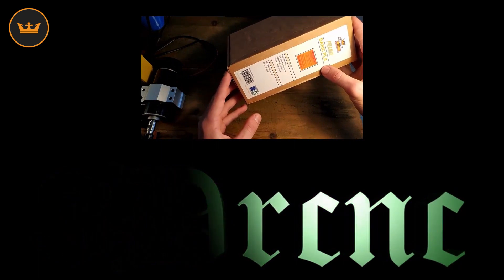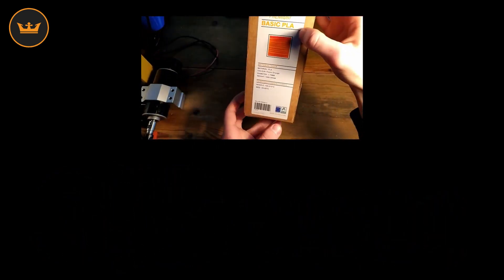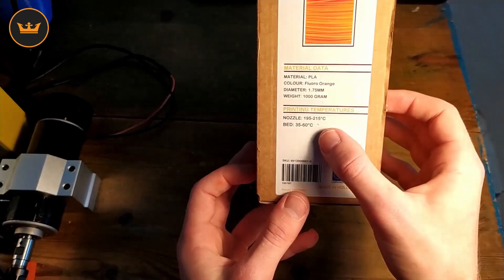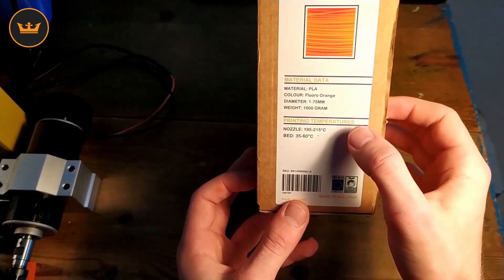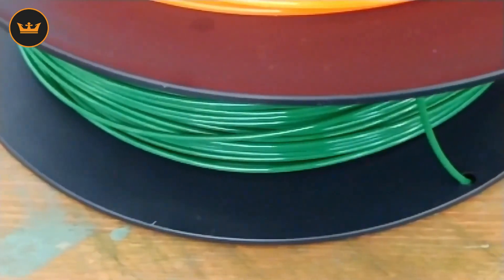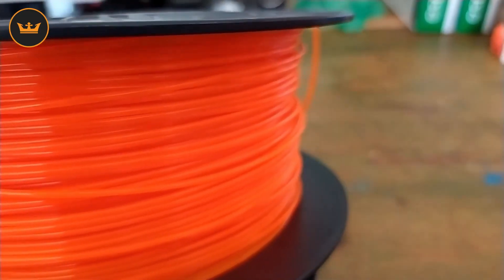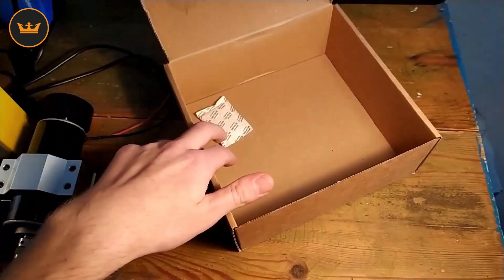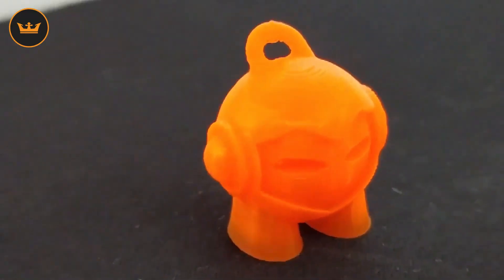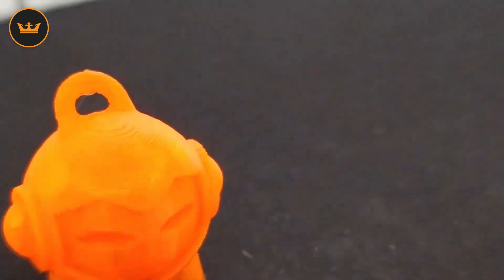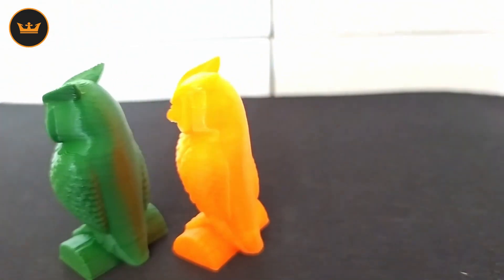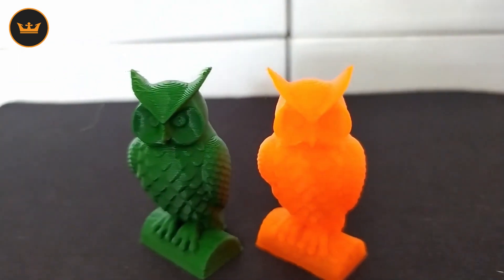The filament comes in these cardboard boxes. You can see some printing settings on the outside for your nozzle and bed, and also which filament it is. They come sealed with silica gel bags to keep the filament dry.